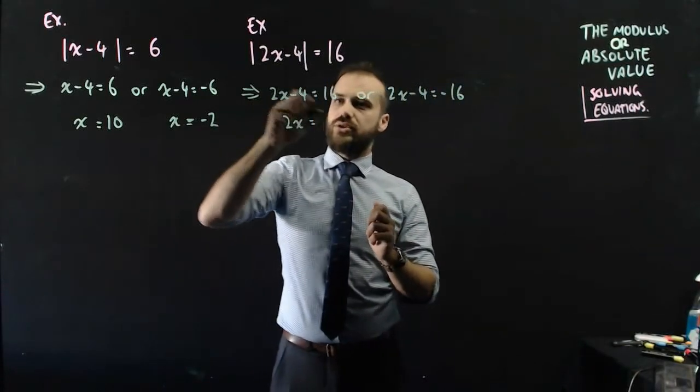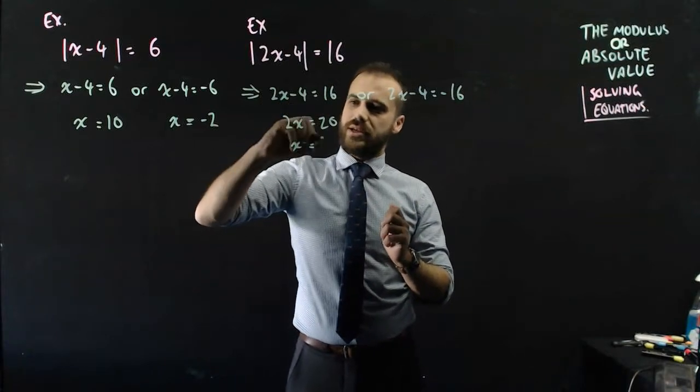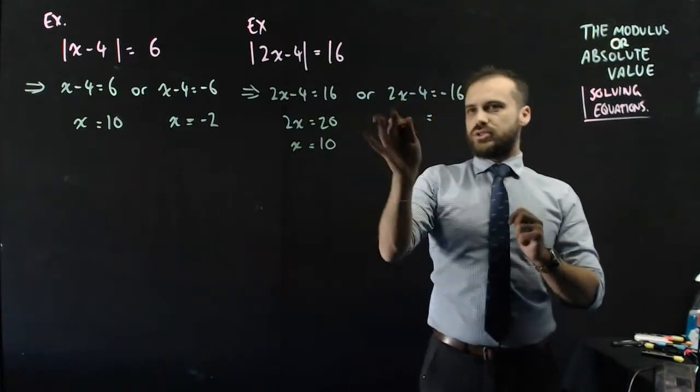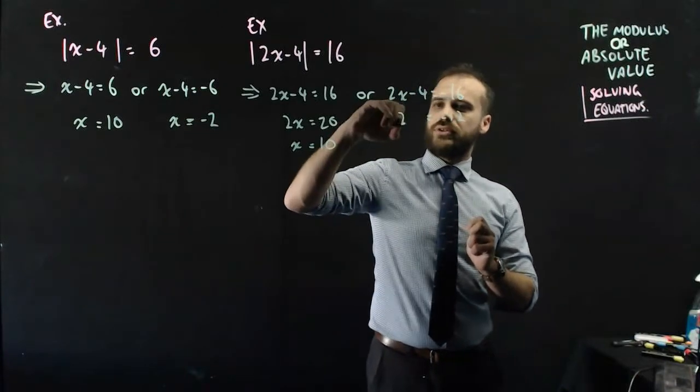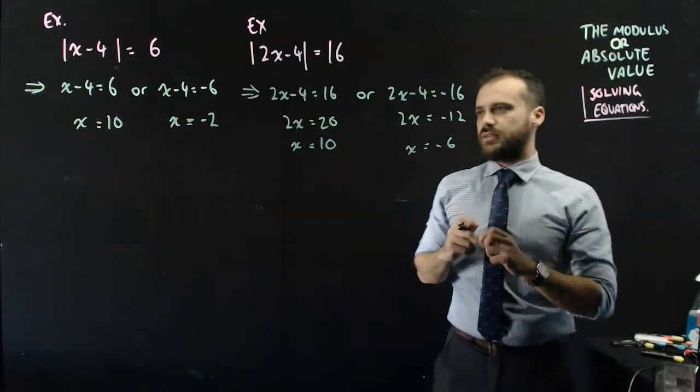We can jump through that. 2x plus 4 is 20, x equals 10. Or 2x equals negative 16 plus 4, which is negative 12, so x equals negative 6.